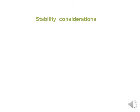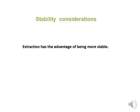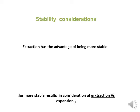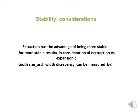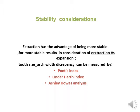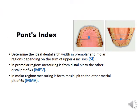For stability considerations, extraction has the advantage of producing more stable results. For more stable results in extraction versus expansion, arch width discrepancy can be measured by the Ponce index, Linderhearth index, or Ashley House index. These indexes are explained in the CAST analysis lecture.